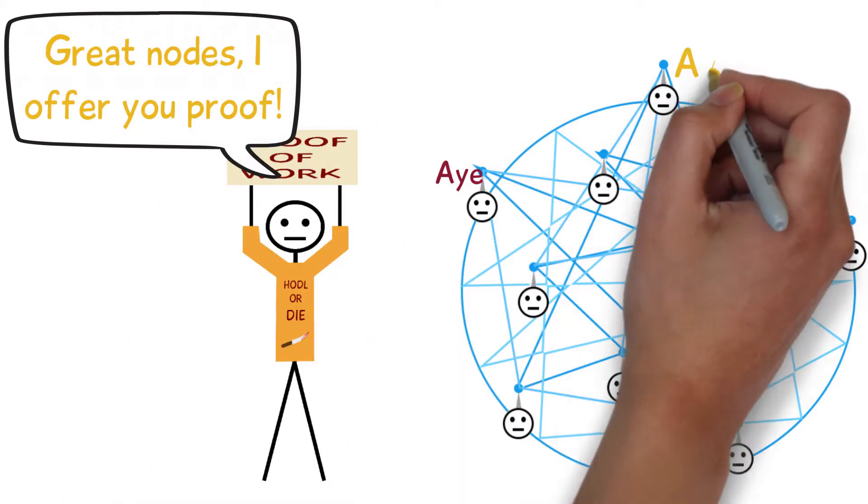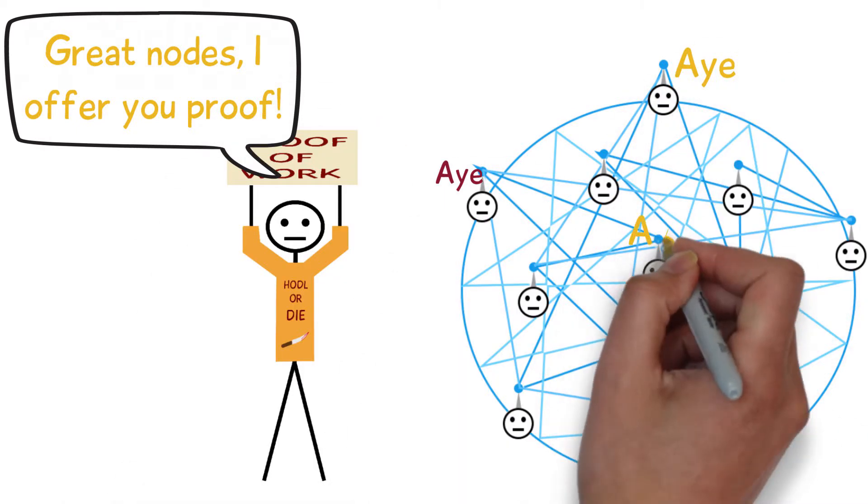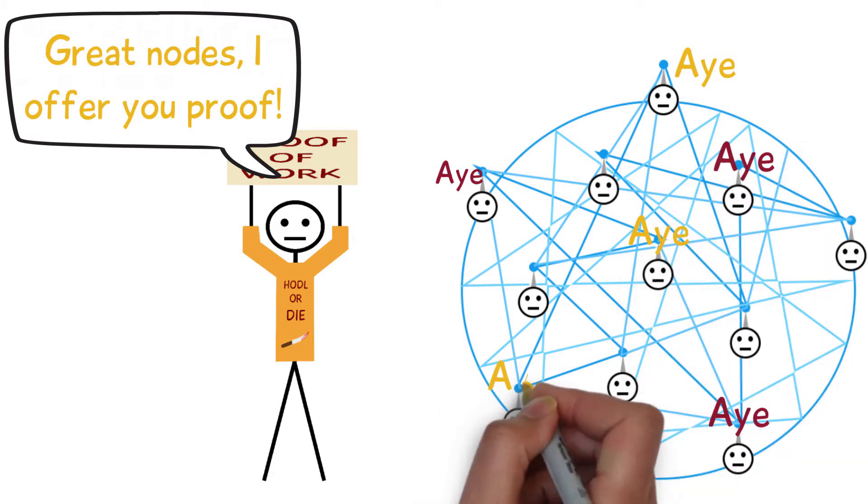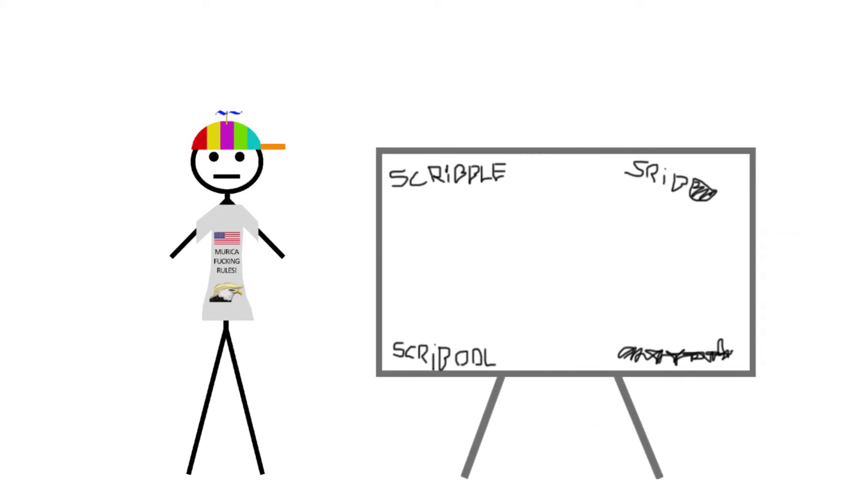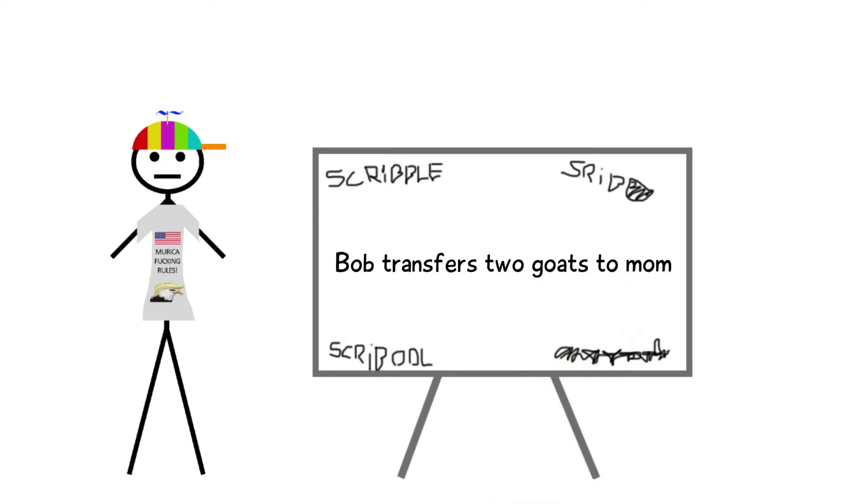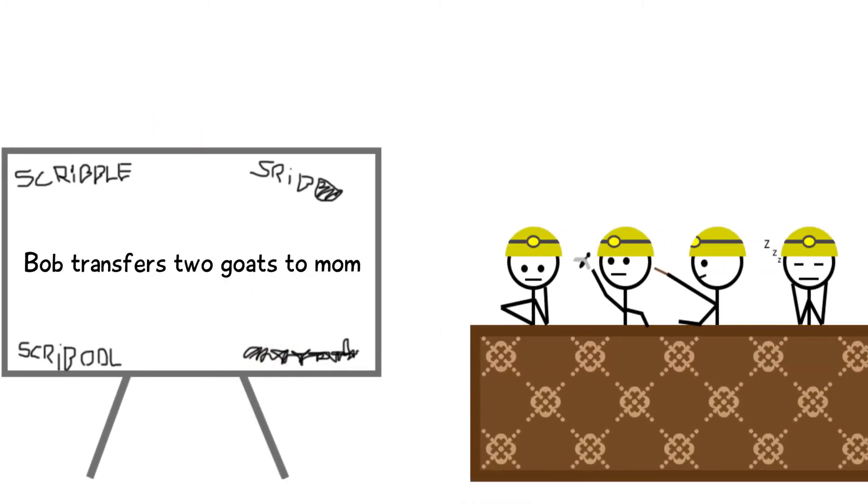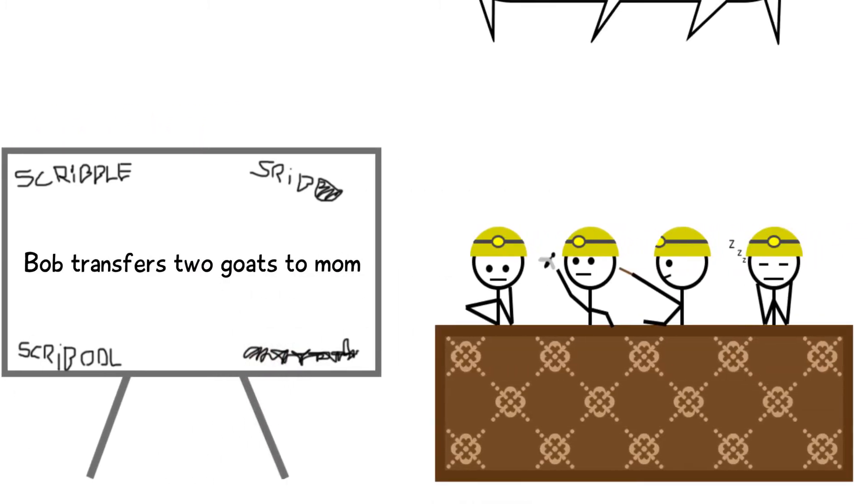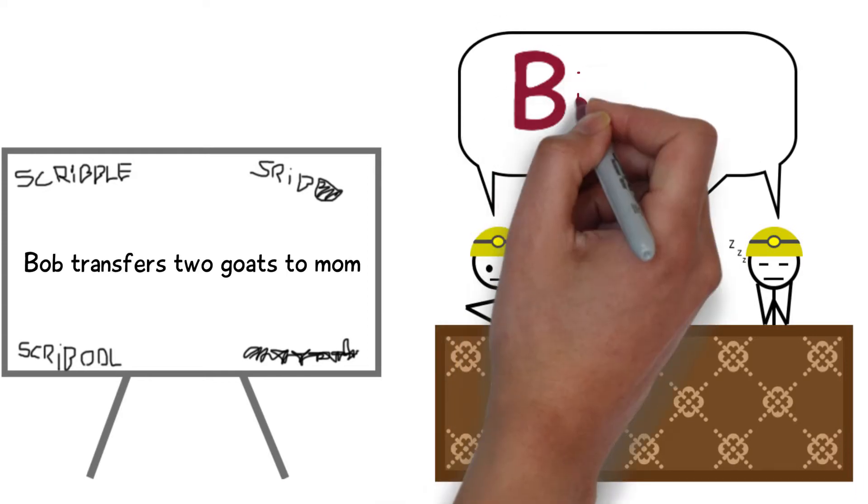The first motivation for having proof of work is that it enables the network to come to a consensus. Let's go back to our friend Bob who was trying to send coins to his mother in India. This time when he writes down his transaction on the big whiteboard, instead of having to wait for one of the miners to solve the puzzle and create a block, all the miners yell out at the same time that they created a new block.